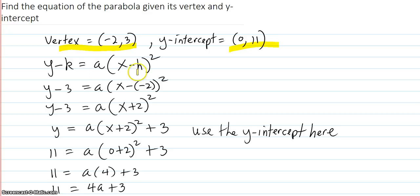So we start off with our vertex form, since we do have the vertex, which is this. Then we plug in 3 is the k, and the negative 2 is the h.